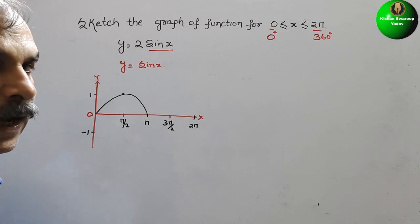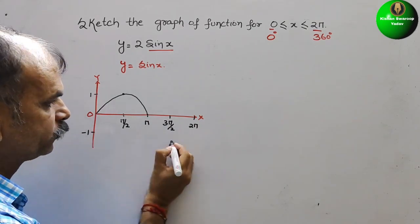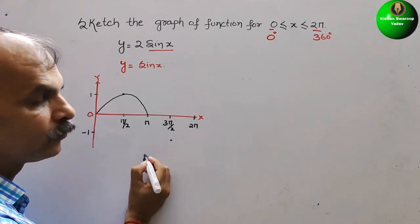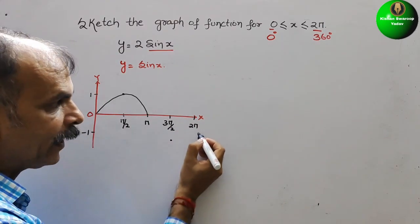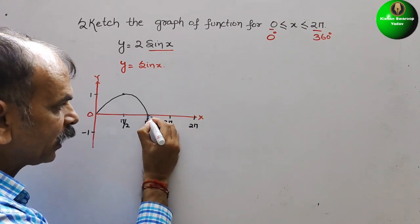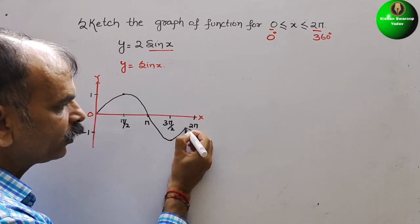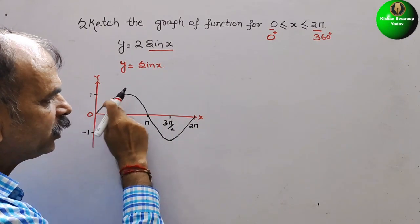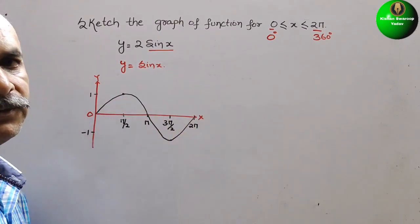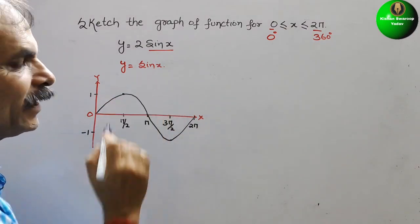Next, at 270 degrees, that is your 3π by 2, it is minus 1. So here comes your, again at 2π, it is 0. Here it will come. So therefore this graph will continue in the downstream and it will go up to here. So this is the normal sine graph. What we are making? That is y is equal to sin x.